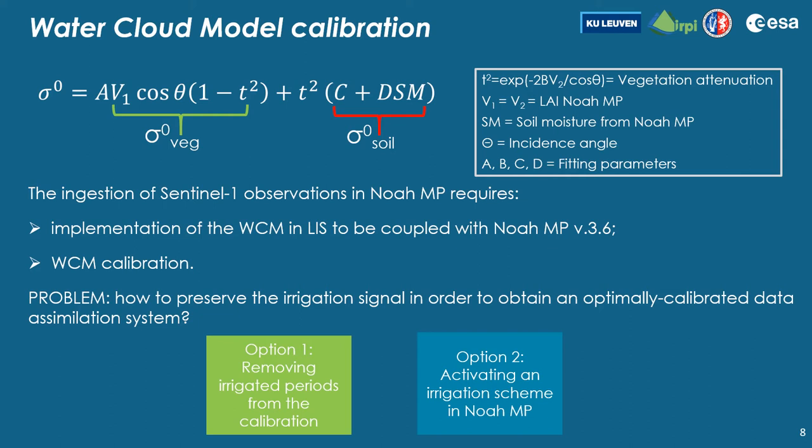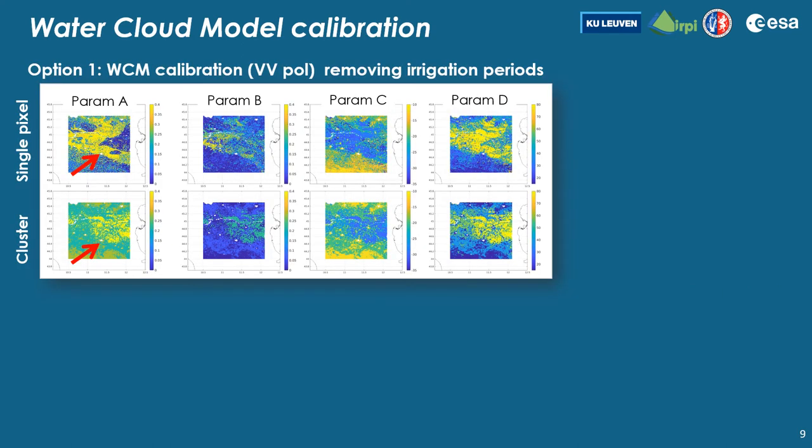The main challenge is how to preserve the irrigation signal within the data assimilation system, and we found two options. Option 1 is removing irrigated periods from the calibration, and Option 2 is activating an irrigation scheme into Noah-MP. For Option 1, here are two examples of calibrated parameters related to a single pixel and a clustering calibration in the first and second lines respectively.